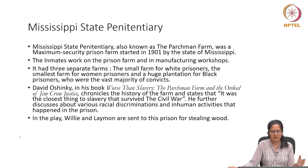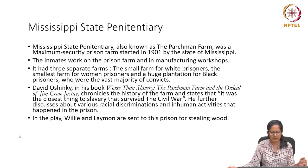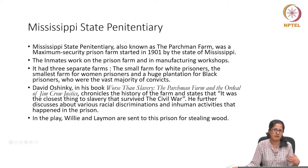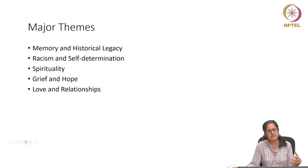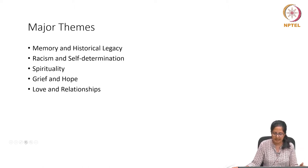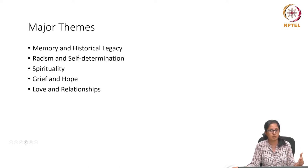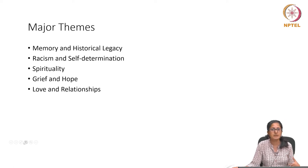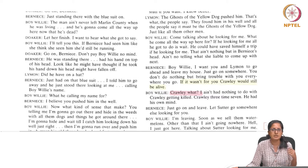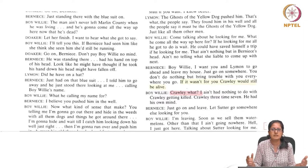Oshinsky also discusses the various racial discriminations and inhuman practices meted out to black prisoners. In the play, Willy and Limon are sent to prison for stealing wood, which may seem like a petty crime but they receive very severe treatment. The major themes emerging from the play include memory and historical legacy, racism and self-determination, spirituality, the dichotomy between grief and hope, and the emotions of love and relationships experienced by the characters.